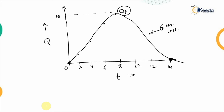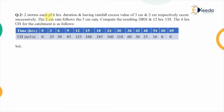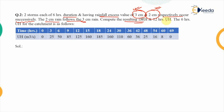The next problem states: for two successive storms each of 6-hour duration, with rainfall excess of 3 cm and 2 cm respectively, compute the resulting direct runoff hydrograph and the 12-hour unit hydrograph. The values for the 6-hour unit hydrograph of the catchment are given.